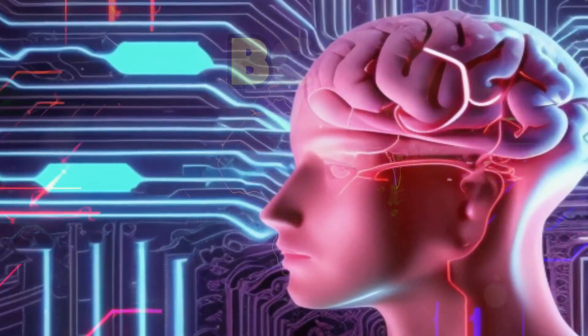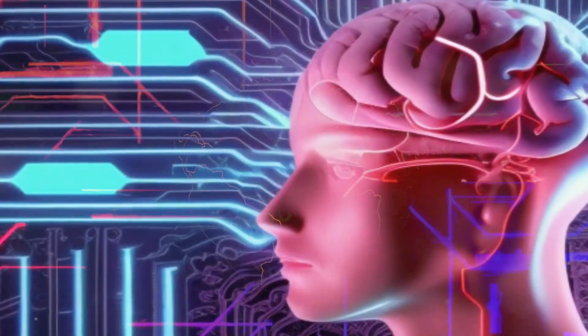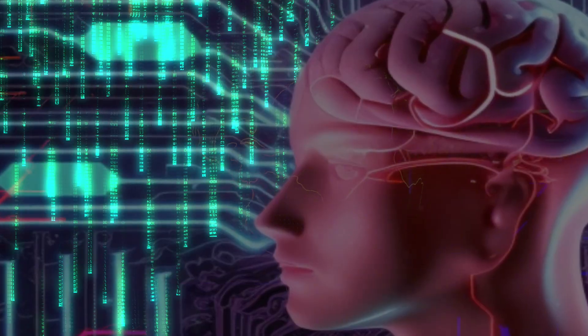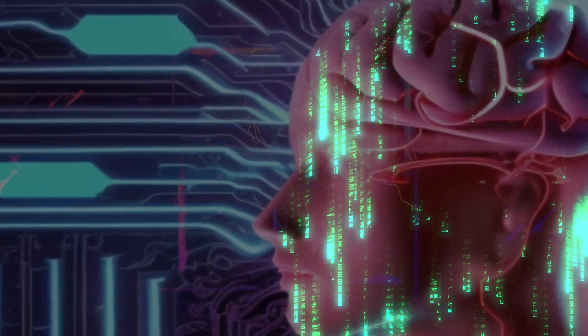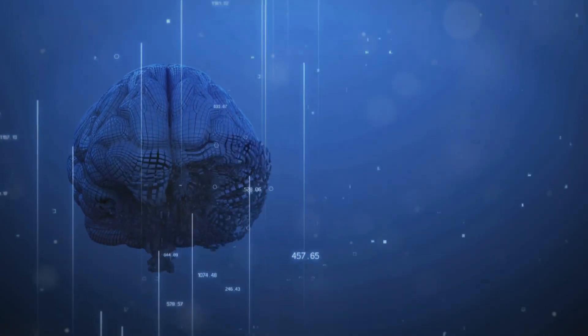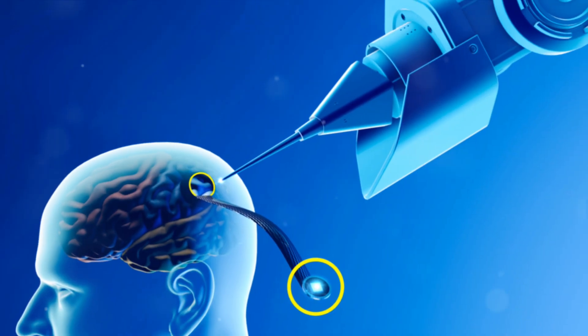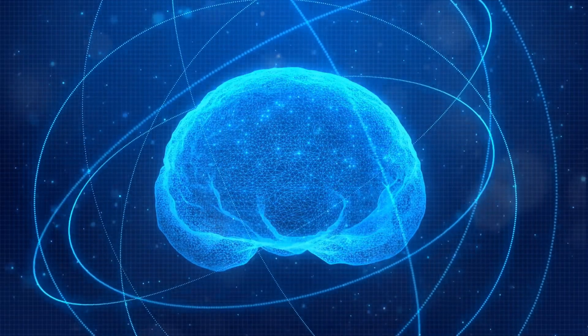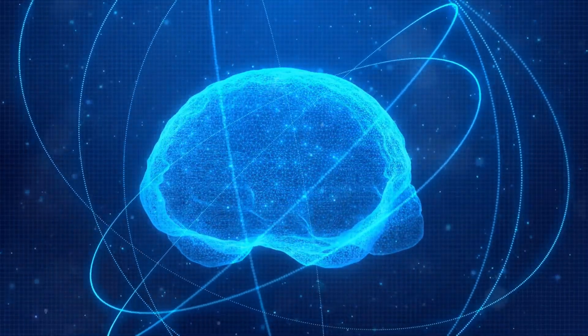This is the world of brain-computer interfaces, BCIs for short, where the lines between human and machine begin to blur. BCIs are devices that bridge the gap between the brain and digital devices, translating neural signals into commands that a computer can understand. It might sound like science fiction, but companies like Neuralink are making it a reality.